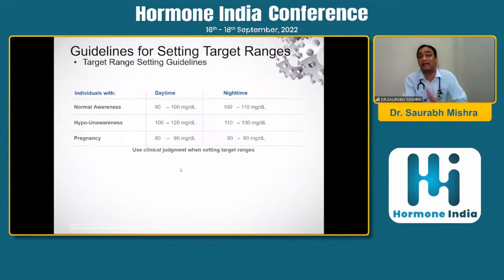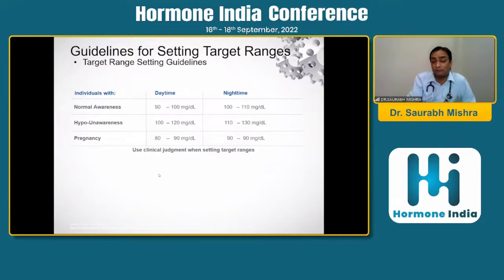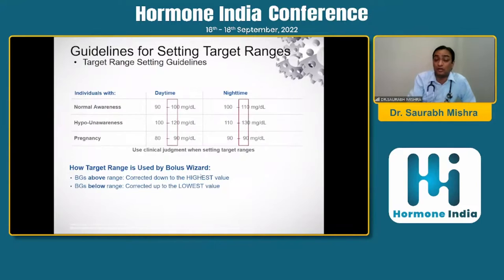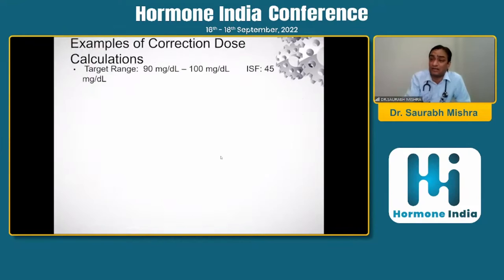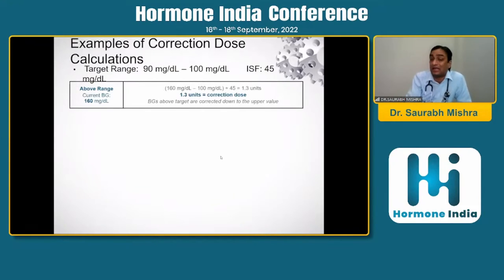Target range setting guidelines: normal awareness 90–100 mg/dL; for hypoglycemia unawareness 100–120 mg/dL; nighttime 110–130 mg/dL; in pregnancy 80–90 mg/dL. Targets must be set and bolus wizard results used accordingly. Bolus wizards are automated systems on advanced pumps using AI algorithms to manage hypos and hypers — if a bolus is missed, the algorithm will attempt to judge and deliver the required insulin.